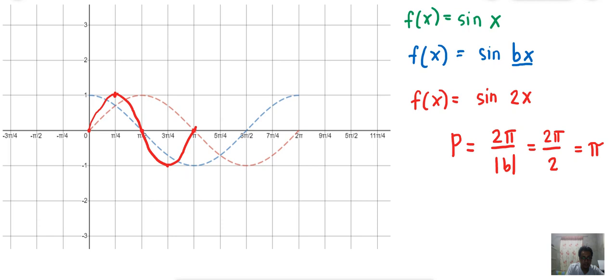So yun yung effect ng presence of B. Instead of 2π as the period, na-compress na sya, from 0 to π na lang, yung kanyang period.